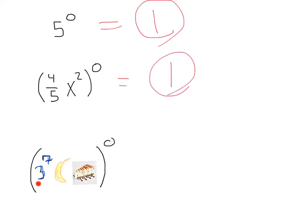Last up, we have 3 to the 7th, banana cheesecake, all to the 0 power. Once again, the power of 1. Whenever you have a 0 exponent, no matter what is the base, you always get an answer of 1.